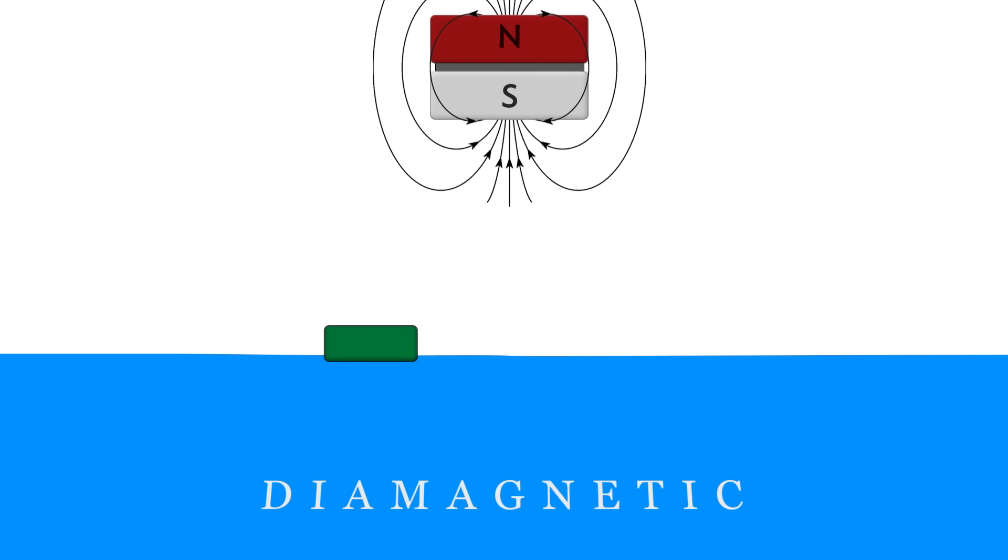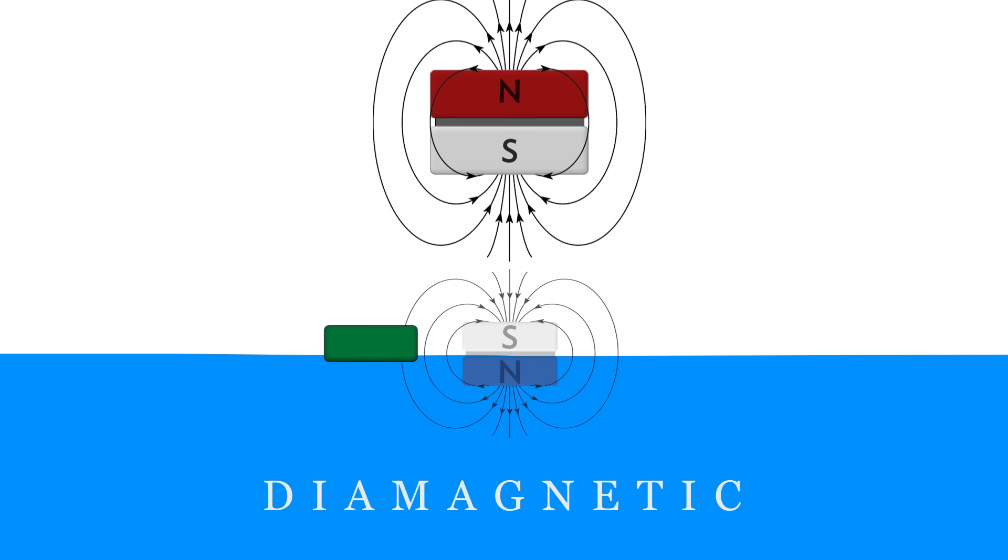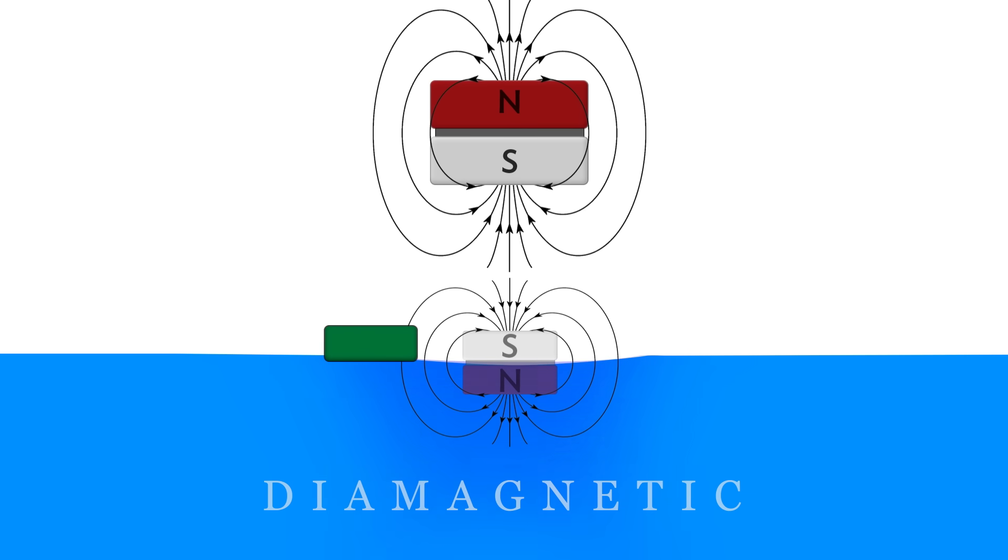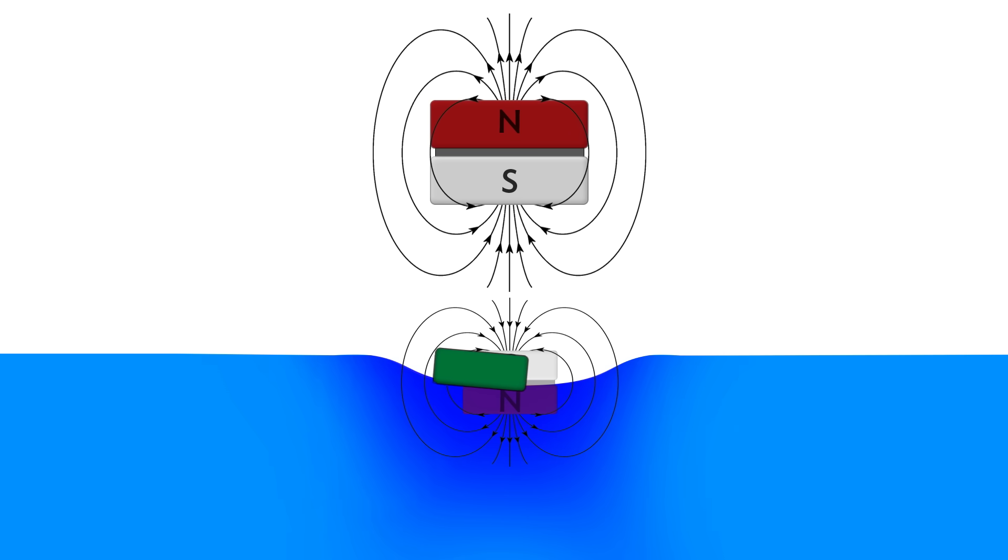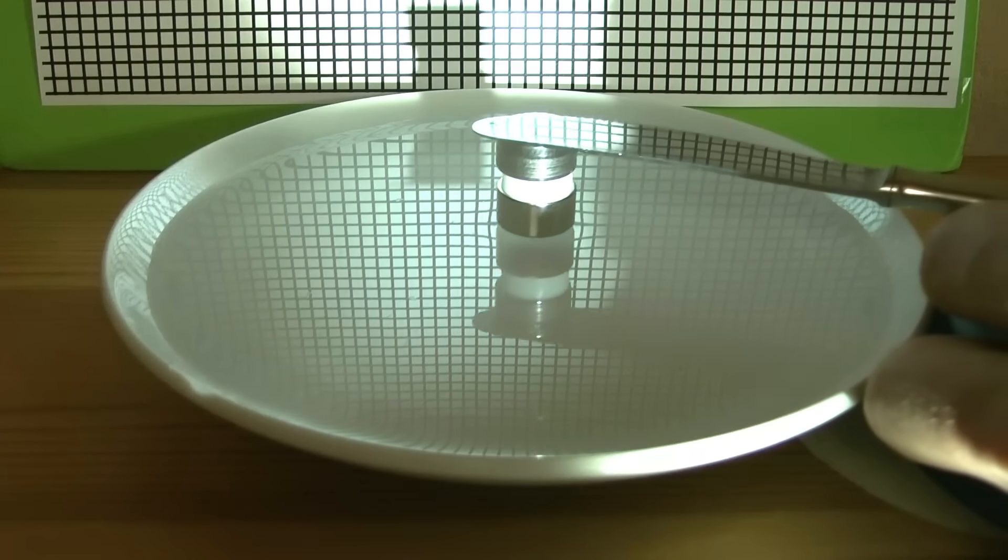Well, water is diamagnetic, which means in the presence of a magnetic field, it generates its own magnetic field in the opposite direction. This means the water is very slightly repelled by the magnet. And this causes a depression in the surface of the water into which a floating object will slide. You can even see this depression by looking at the reflections off the water.